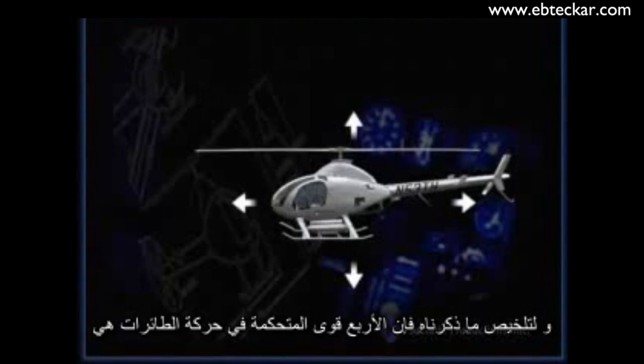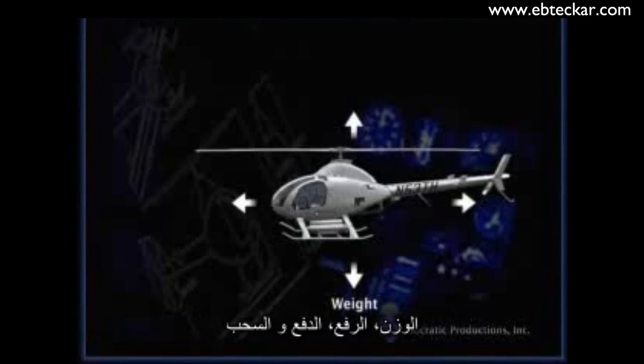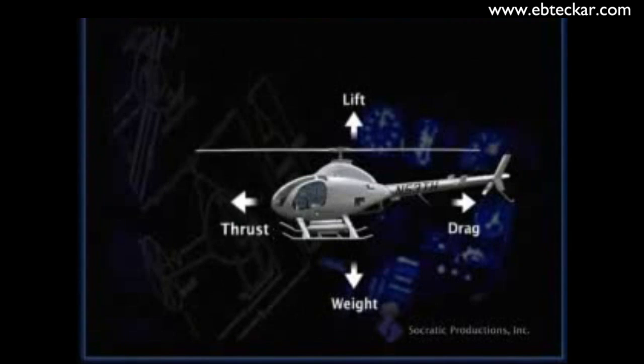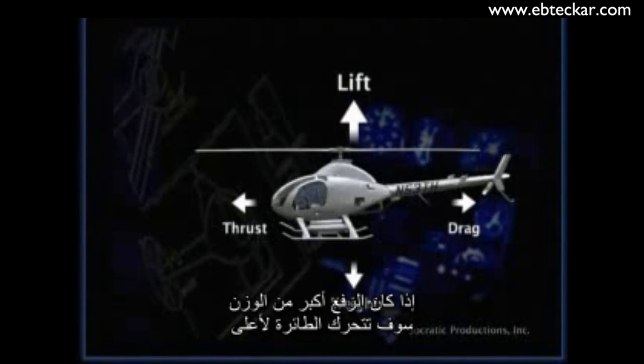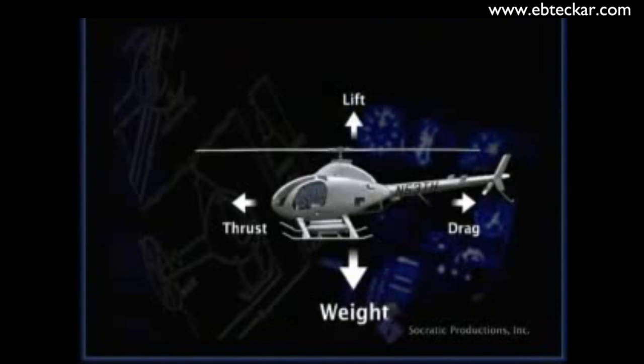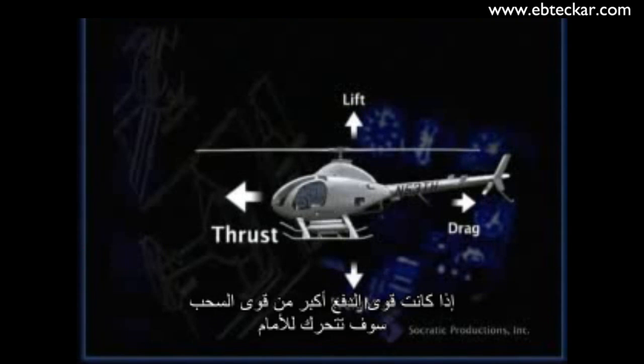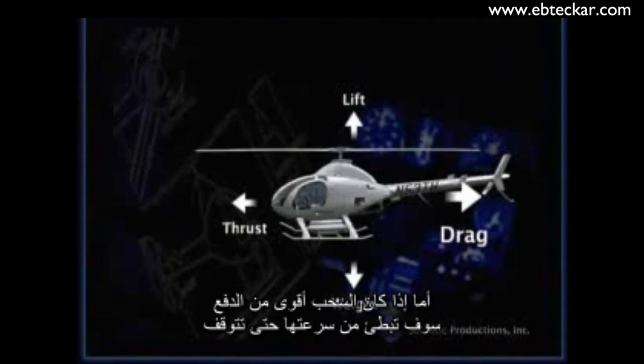To sum up, the four forces acting on an aircraft in straight and level flight are weight, lift, thrust, and drag. Weight and lift are acting vertically, while thrust and drag work horizontally. If lift is greater than weight, the helicopter will move up. If weight is greater than lift, it will move down. If thrust is more than drag, the helicopter will move forward. If there is more drag than thrust, it will slow down or stop.